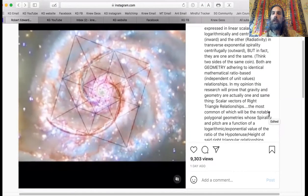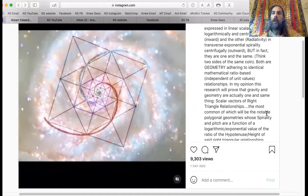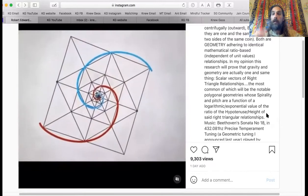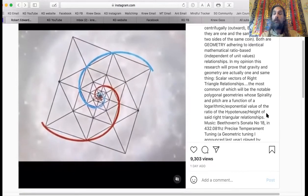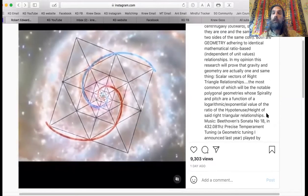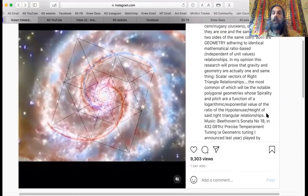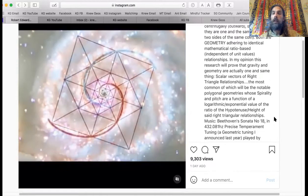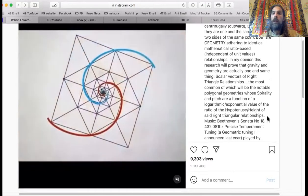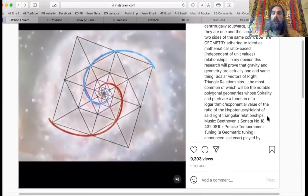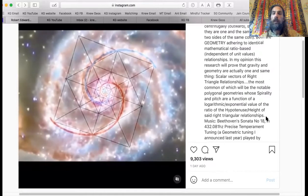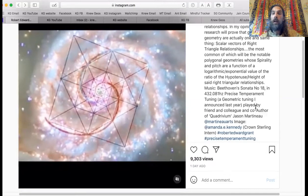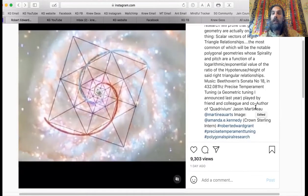Both are geometry adhering to identical mathematical ratios based on independent of unit values, based on relationships. In my opinion, this research will prove that gravity and geometry are actually one in the same thing: scalar vectors of right triangle relationships. The most common of which will be the notable polygonal geometries whose spirality and pitch are a function of the logarithmic exponential value of the ratio of the hypotenuse height of said right triangle relationships.